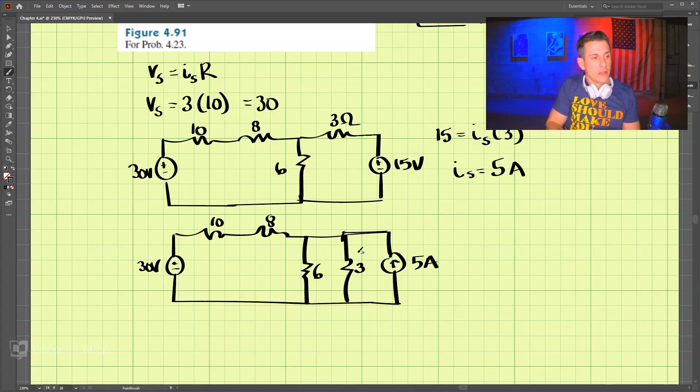Now, these are in parallel, so we can combine these. We have 6 times 3 divided by 6 plus 3. That's 18 divided by 9, which is then just 2-ohms. So we have these two combined for 2-ohms.